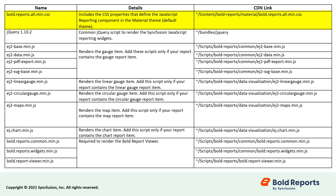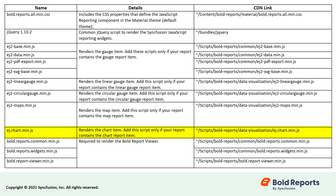Bold.reports.all.min.css includes the CSS properties for the JavaScript reporting component. The jQuery 1.10.2 script is used to render the Syncfusion JavaScript reporting widgets. EJ2Base.min.js, EJ2Data.min.js, EJ2PDFExport.min.js, and EJ2SVGBase.min.js are used to render the gauge item. EJ2LinearGauge.min.js renders the LinearGaugeReport item. EJ2CircularGauge.min.js renders the CircularGaugeReport item. EJ2Maps.min.js is used to render the map report item. EJ.chart.min.js renders the chart report item. Bold.reports.common.min.js, bold.reports.widgets.min.js, and bold.reportviewer.min.js are mandatory to render the Bold Reports report viewer.